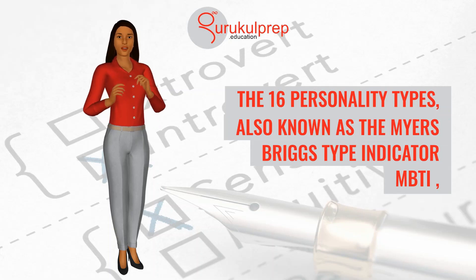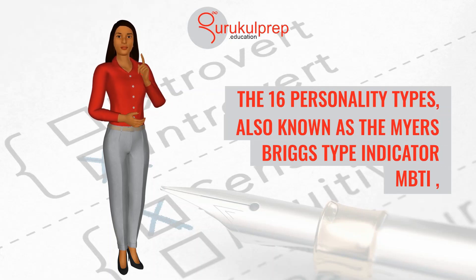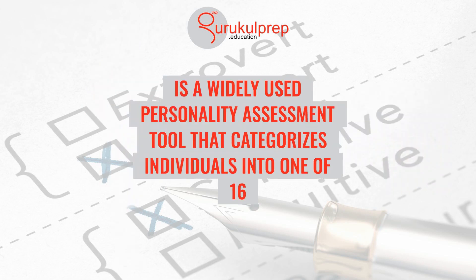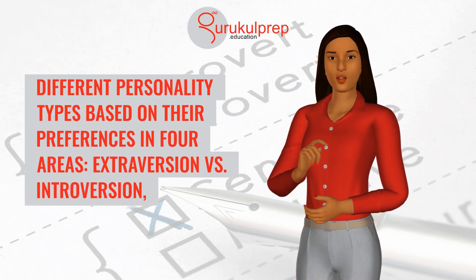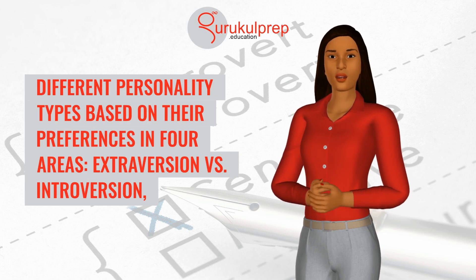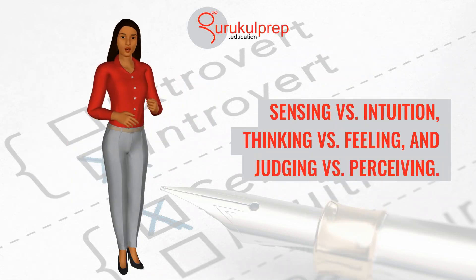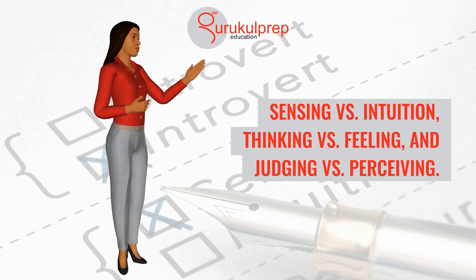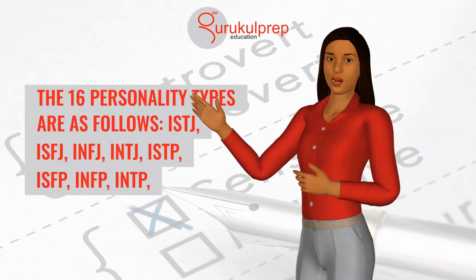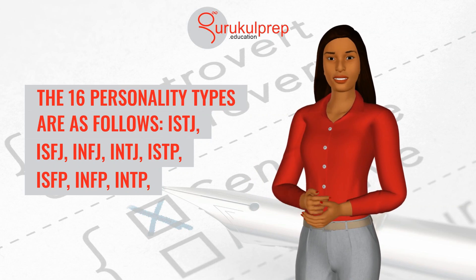The 16 Personality Types, also known as the Myers-Briggs Type Indicator (MBTI), is a widely used personality assessment tool that categorizes individuals into one of 16 different personality types based on their preferences in four areas: extroversion versus introversion, sensing versus intuition, thinking versus feeling, and judging versus perceiving.